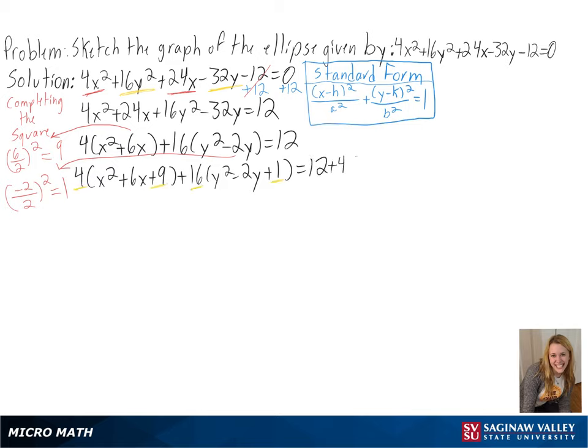Whatever we add to the left side, we must also add to the right side. So distributing the 4 and the 16, we get 4 times 9 and 16 times 1 to our 12. So we are left with 4 times x plus 3 squared plus 16 times y minus 1 squared equals 64.